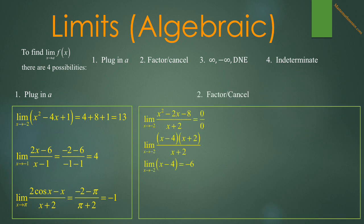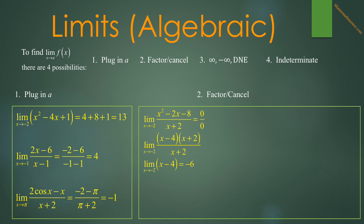Sometimes, when you use the plugging in technique, you get 0 over 0. In that case, the limit of f of x as x approaches a may or may not exist. The first step is to factor both numerator and denominator. It is possible that you can get some cancellation, and if that happens, the limit very well may exist. For instance, the limit as x approaches negative 2 of x squared minus 2x minus 8, all over x plus 2, gives 0 over 0. Factoring the numerator gives x minus 4 times x plus 2; the x plus 2's cancel out, and we get the limit as x approaches negative 2 of x minus 4, which is negative 6.